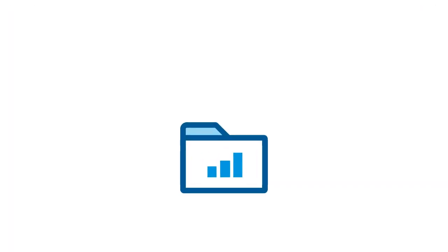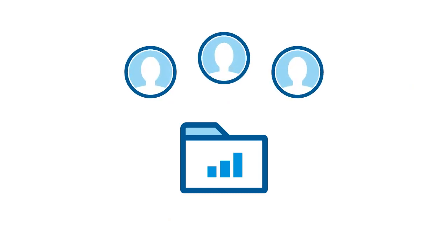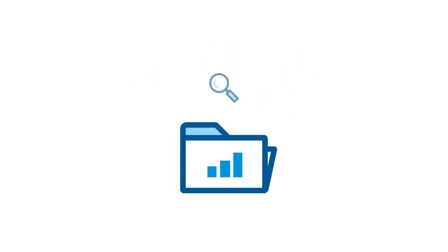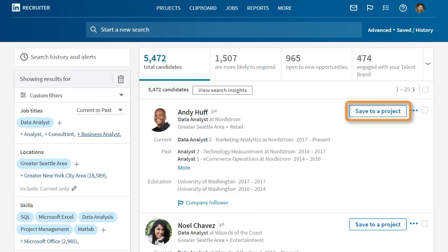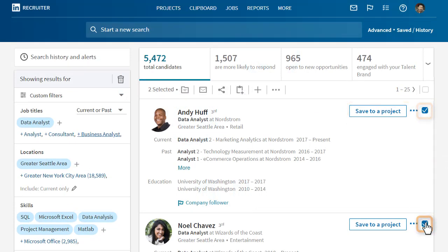This is where the magic really begins. When you save one or more profiles from the search results page to a project, your search becomes part of the project too, so you can easily access all your work for a specific job requisition in one place. Simply click the Save to Project button next to one candidate, or select multiple candidates and click the folder icon.